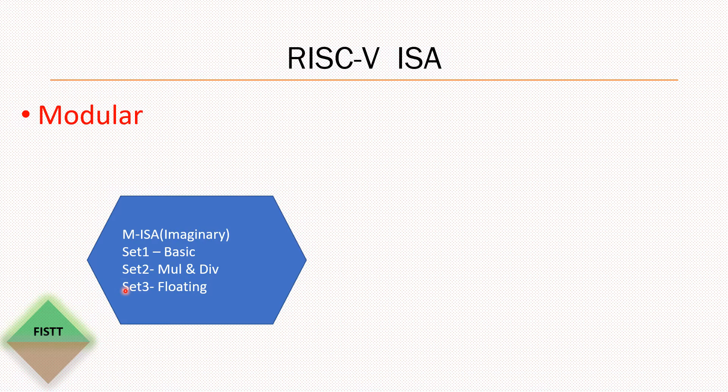Set three covers the floating point instructions. Now, to make processor M for a specific application that does not use multiplication or division instructions, you are free to get rid of that instruction set. This is what a modular ISA is — in a modular ISA, you are free to pick and choose the set of instructions that your application needs to use.